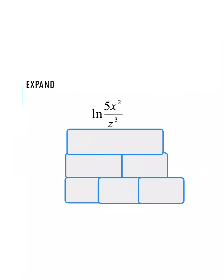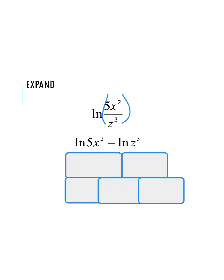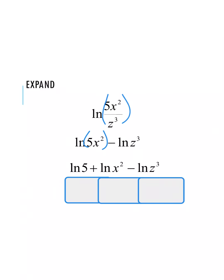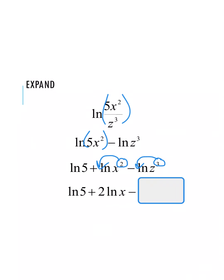One more expansion example. We have the natural log of 5x squared over z cubed. First, split numerator and denominator: natural log of 5x squared minus the natural log of z cubed. For natural log of 5x squared, that has two values — 5 and x squared — so split by adding: natural log of 5 plus natural log of x squared, then minus natural log of z cubed. Natural log of 5 is done. Move the exponent from x squared to the front, and the exponent from z cubed to the front. Final answer: natural log of 5 plus 2 times the natural log of x minus 3 times the natural log of z.